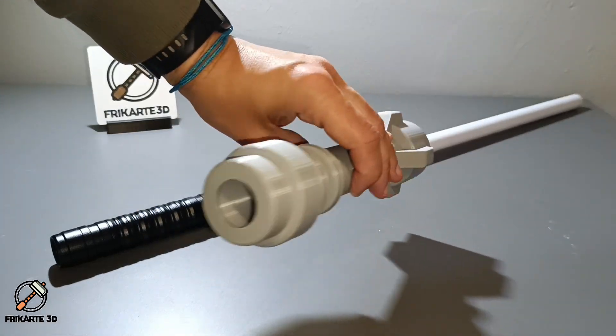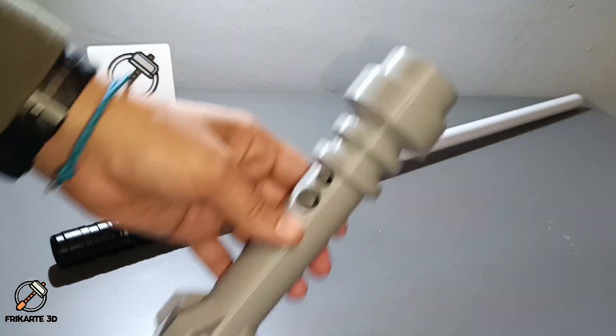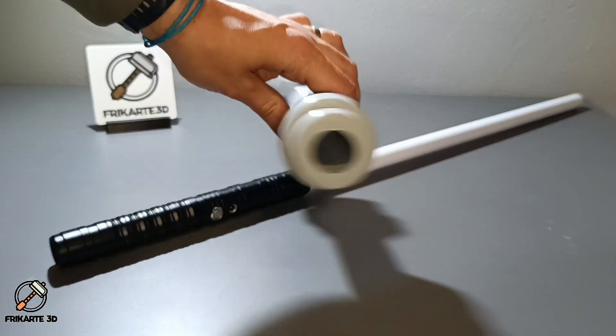The hilt has a simple but effective design. It is hollow to insert the lightsaber and has holes for the button and charging.